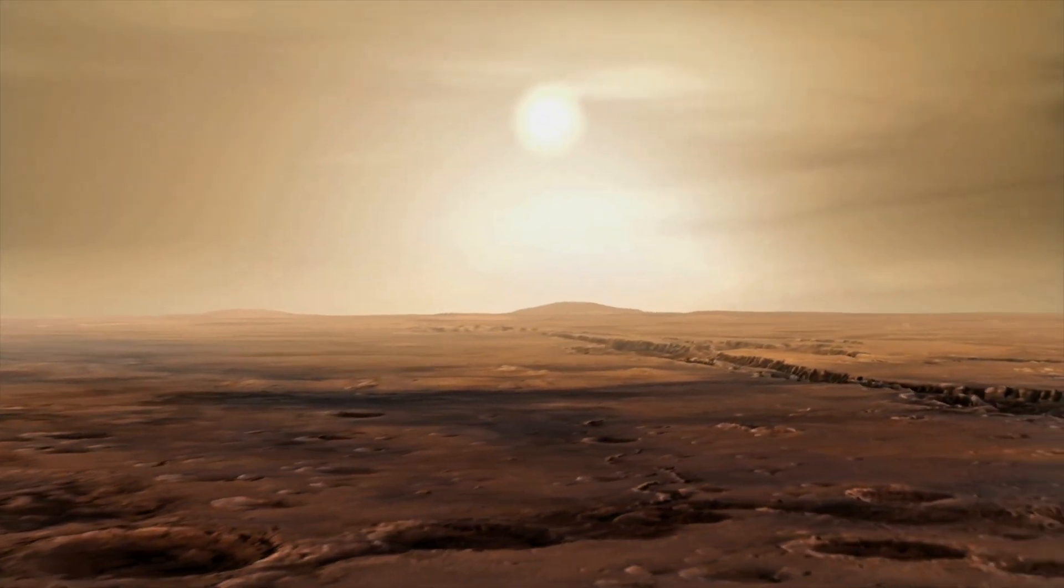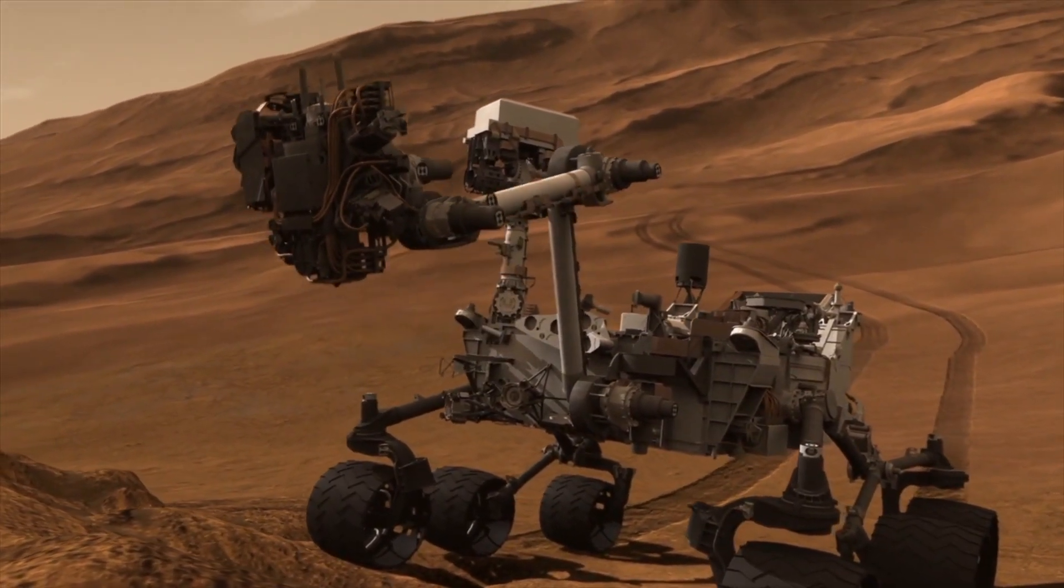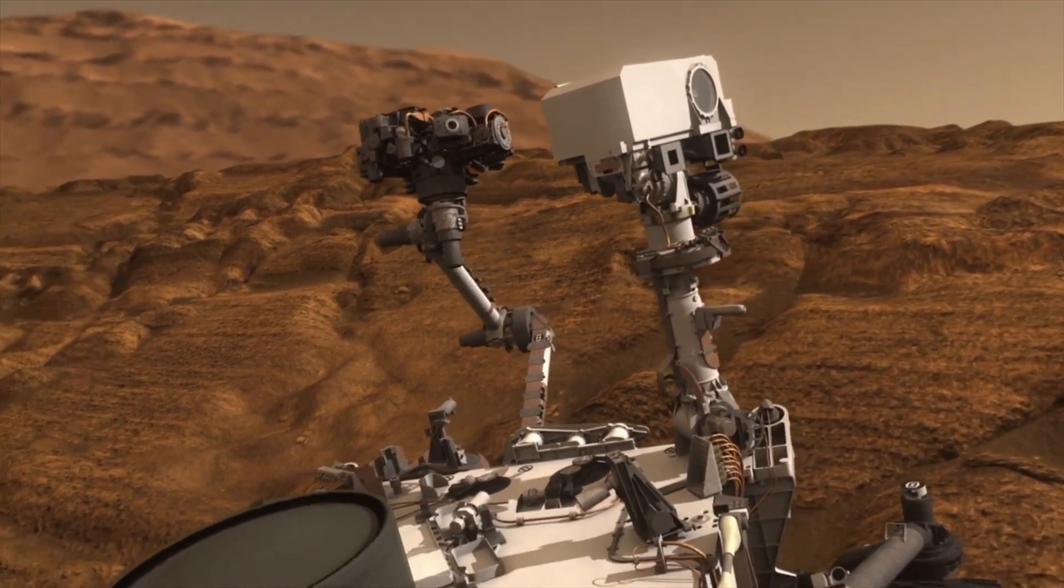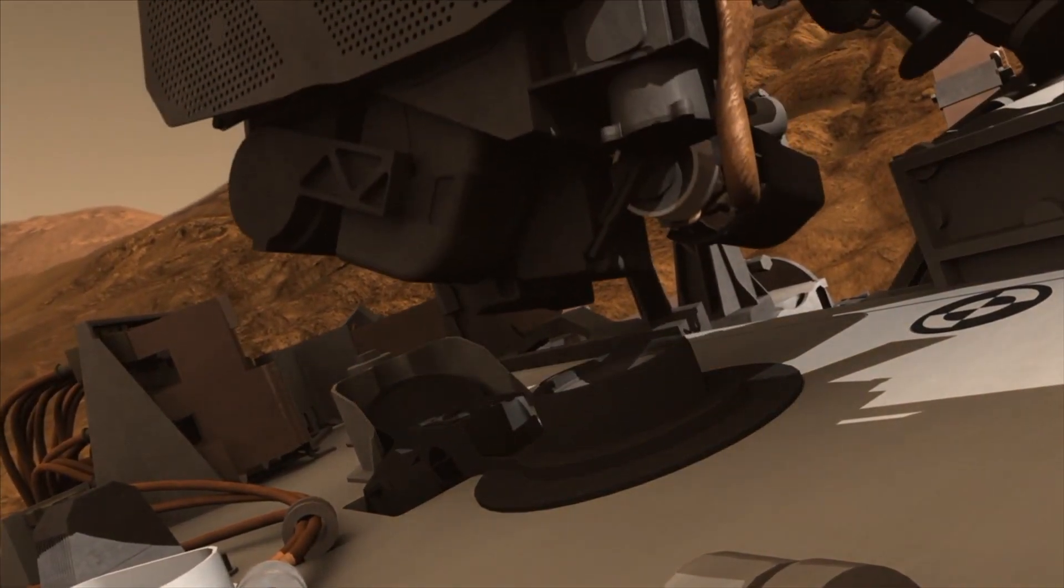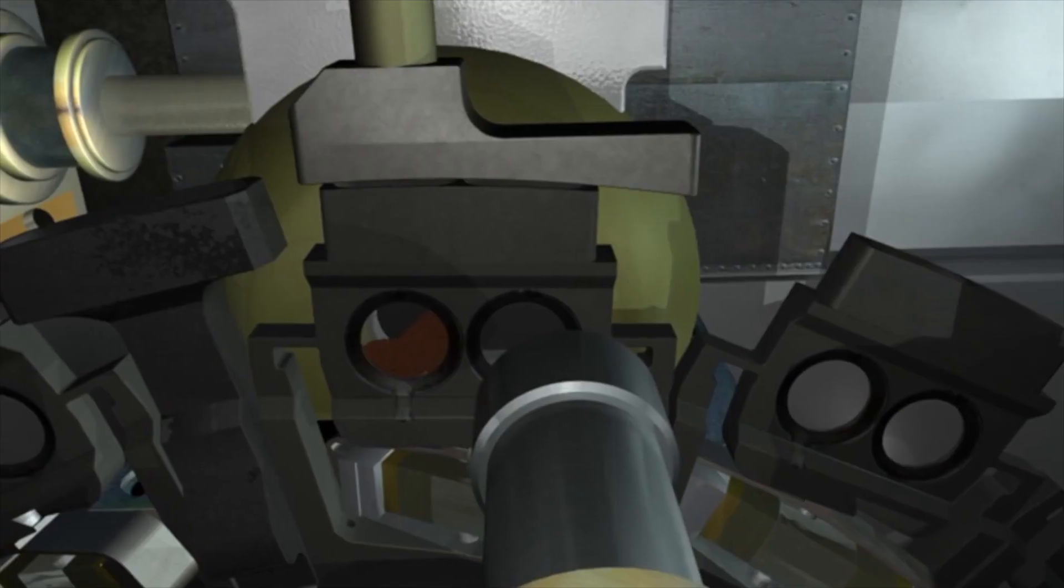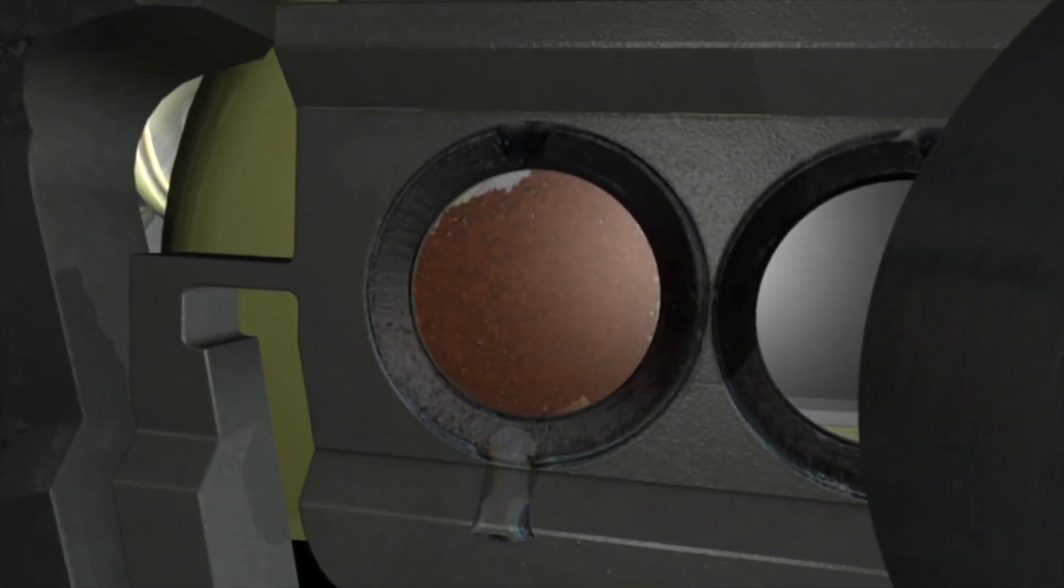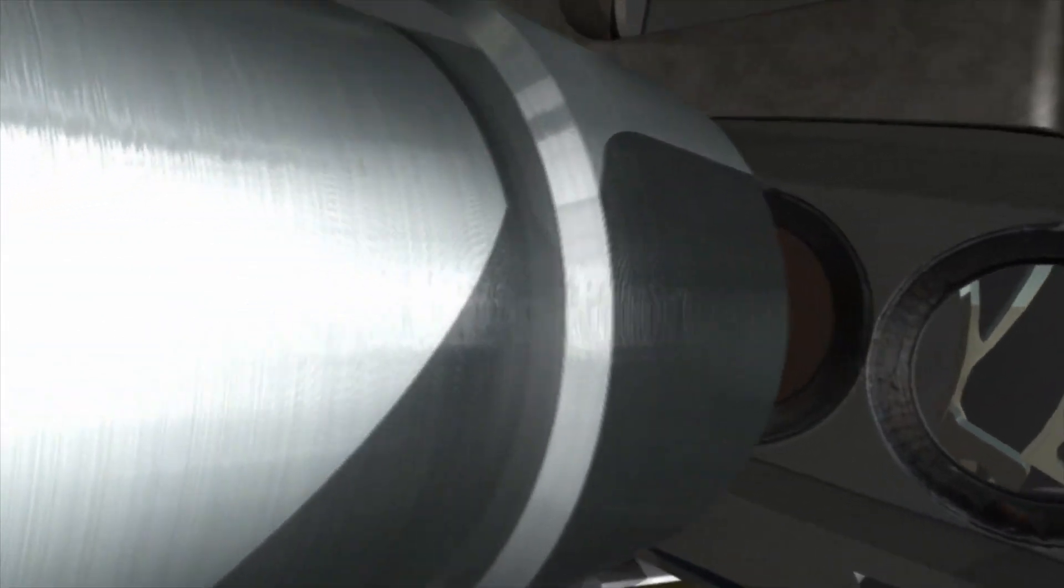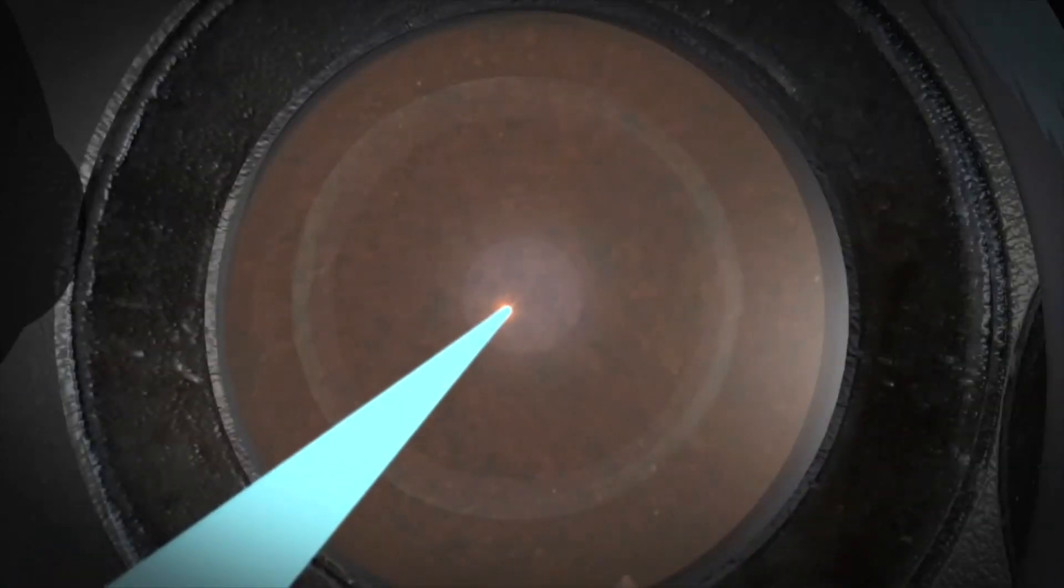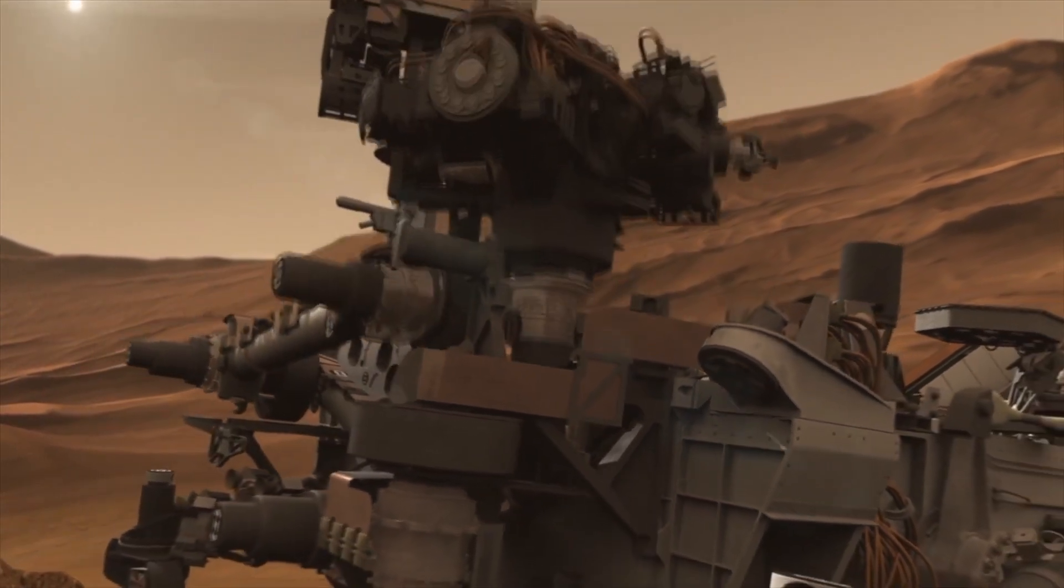Mars. The Curiosity rover is searching for clues about the origins of the red planet. It confirms the presence of oxygen and nitrogen isotopes hidden in the rocks and soil. Isotopes, the relative abundances of these isotopes are like fingerprints. Curiosity confirms a unique mix of isotope fingerprints. The isotopes indicate that Mars formed elsewhere in the solar system and moved into our neighborhood.